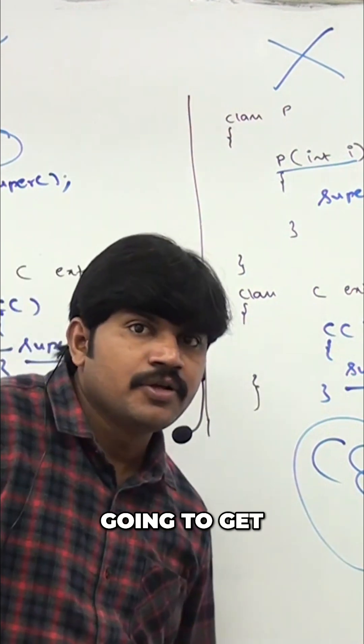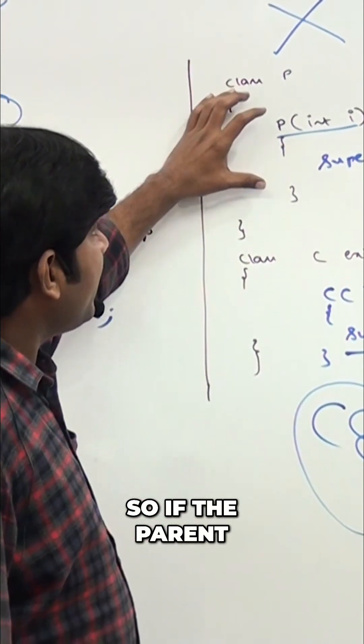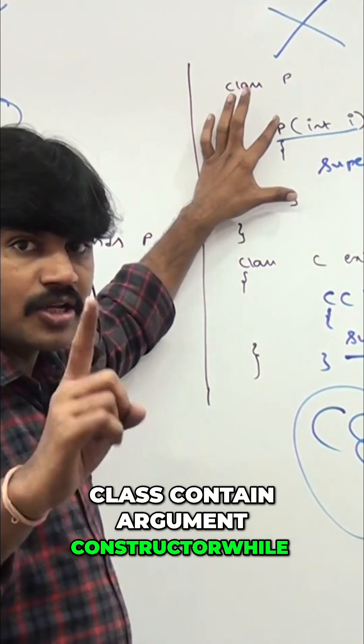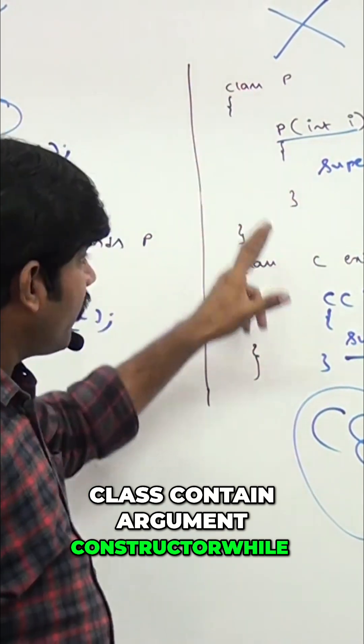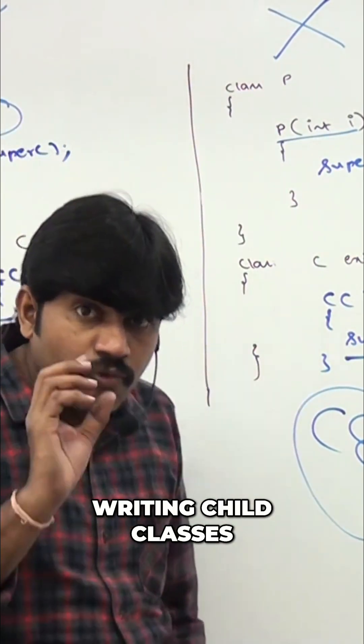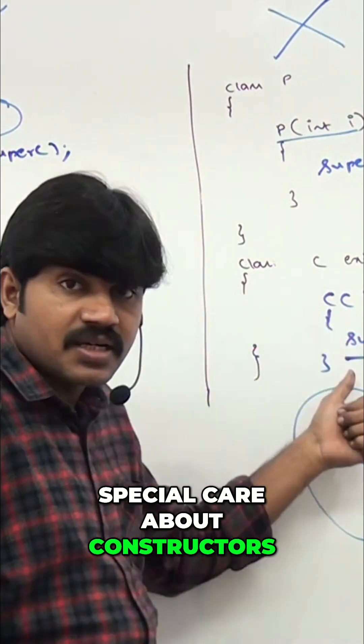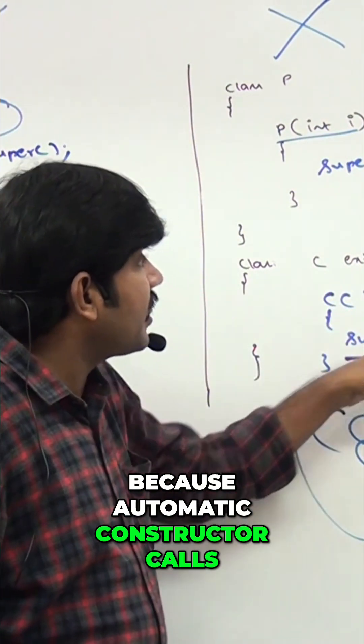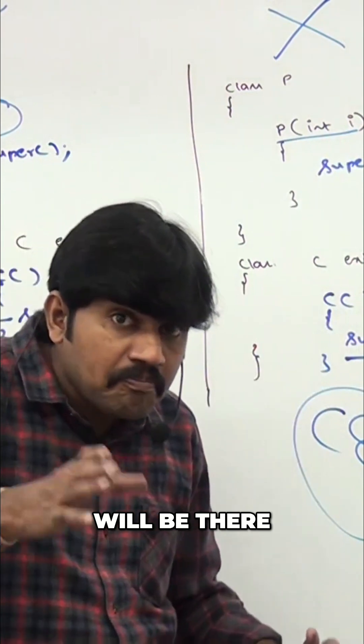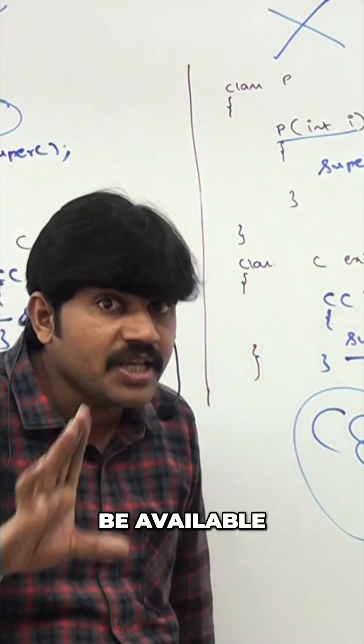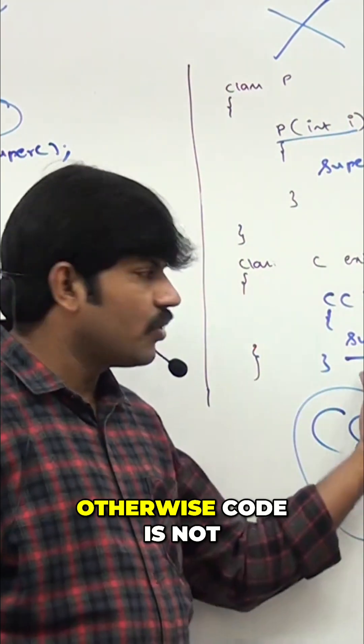So if the parent class contains an argument constructor, while writing child classes we have to take special care about constructors, because automatic constructor calls will be there. Compulsory, the matching constructors should be available, otherwise the code is not going to compile.